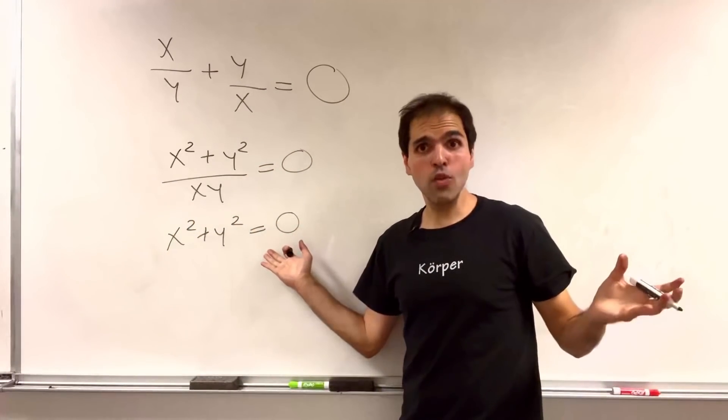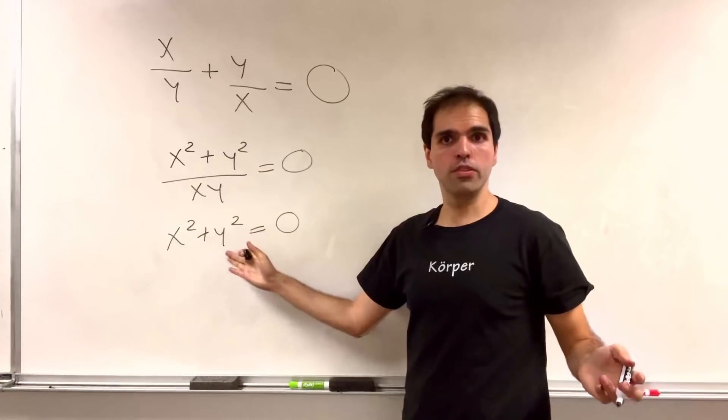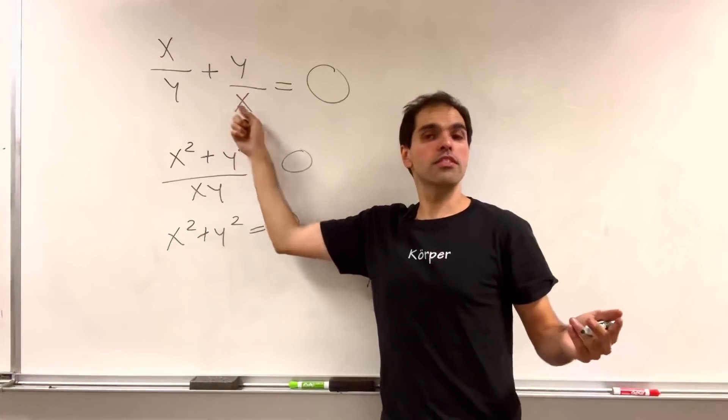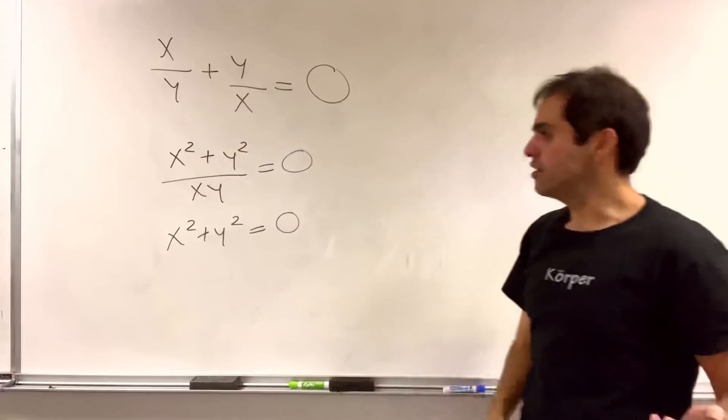Now, in the real realm, this only has a trivial solution, 0, 0, which doesn't even make sense here. 1 over 0 is not defined.